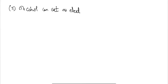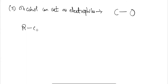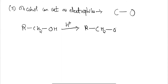Alcohol can act as an electrophile also. Here the breaking of the bond between carbon and oxygen takes place, and due to this reason it will be acting as an electrophile. On protonation of an aliphatic alcohol, the formation of protonated alcohol will take place.